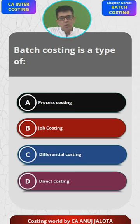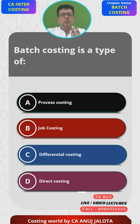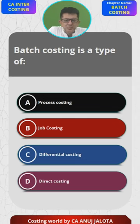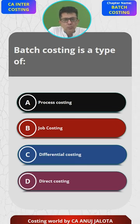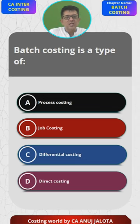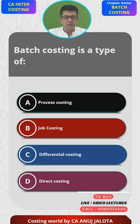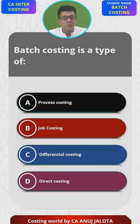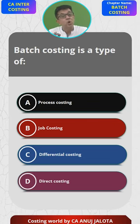The answer is very clear. Batch costing is almost similar to job costing. What is job costing? A customer tells you to produce a unit for them, another customer comes and asks for something else, a third customer comes with yet another order — each and every order you get is different. That is called job costing.